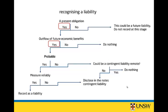Now, is it probable? This is a separate test. Sometimes future economic benefits might flow from the entity, but we need to determine if it's more than 50% likely to happen — probable being roughly the 50% test. Is it probable? Yes. We can say this because of past behaviour: they have this warranty provision and there is evidence that a customer has already returned their goods under the warranty. If the question had said customers never return goods and there's no past evidence, then you could say no, that's not probable.